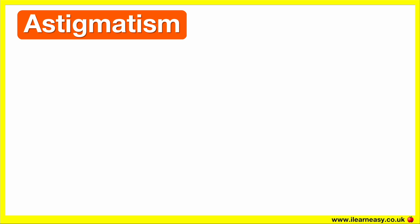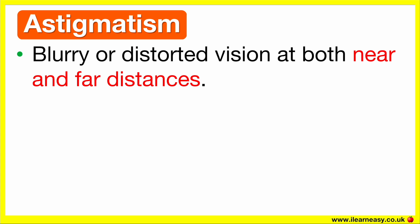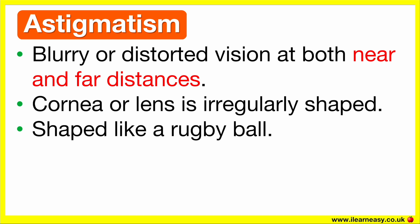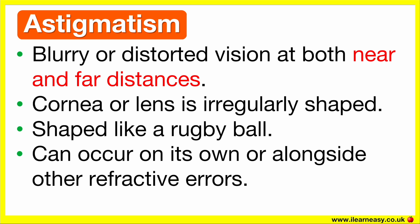Astigmatism is a common vision condition. In simple terms, it's when a person experiences blurry or distorted vision at both near and far distances. The cause of astigmatism is that the cornea or lens is irregularly shaped — so instead of being round like a basketball, it's shaped more like a rugby ball, an oval shape. This uneven shape bends light unevenly, leading to blurred vision. Astigmatism can occur on its own or alongside other refractive errors like myopia or hyperopia.